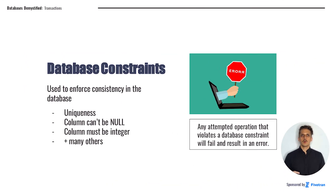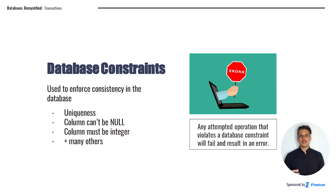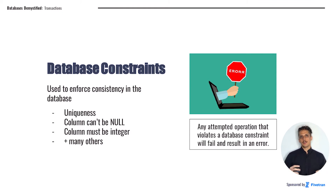Before we get further into this lesson, it's important to understand the idea of database constraints. These are really important, and they're especially important as we talk about where transactions can be most useful. Database constraints are things that programmers use to tell databases what types of data are valid or not. You might have a column that is declared to be unique, that may only have unique values in it — maybe it's a user email field in our web application, so each user must have a different, distinct email address. You might have a constraint that a column can't be null, or that it can't have any text values in it.